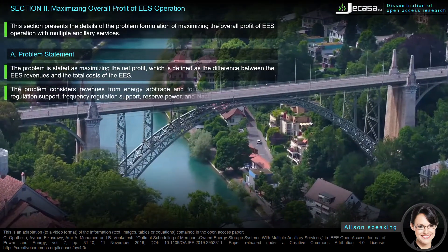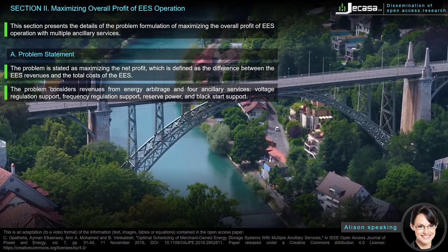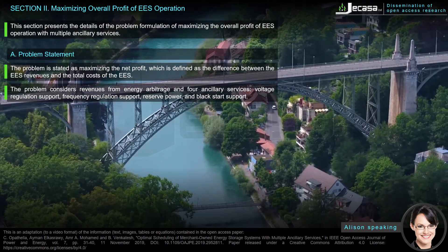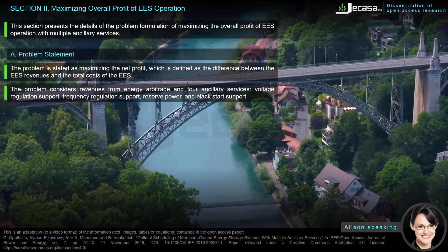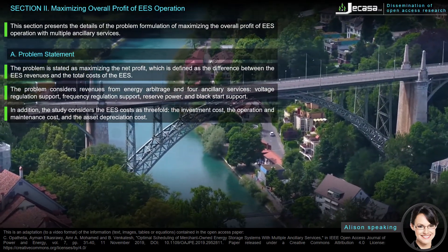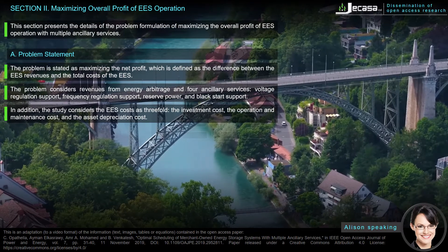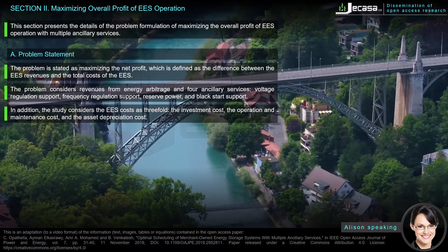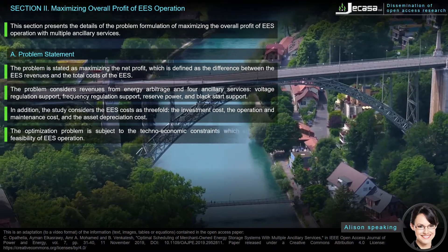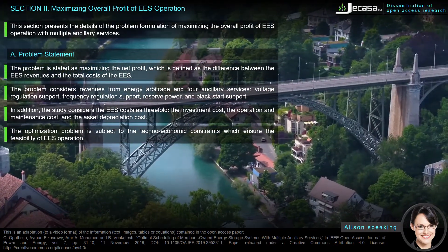The problem considers revenues from energy arbitrage and four ancillary services: voltage regulation support, frequency regulation support, reserve power, and black start support. In addition, the study considers EES costs as threefold: the investment cost, the operation and maintenance cost, and the asset depreciation cost. The optimization problem is subject to techno-economic constraints which ensure the feasibility of EES operation.